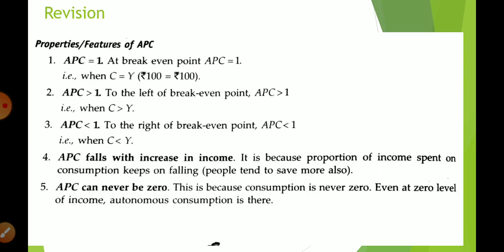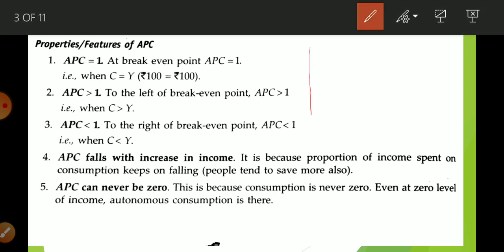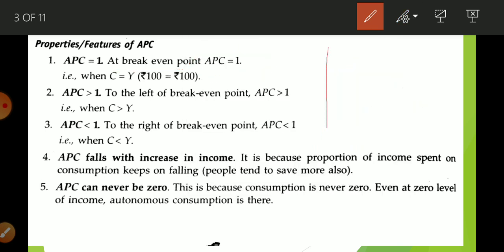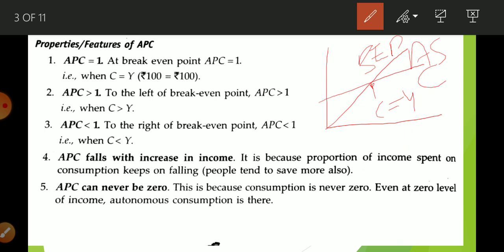Regarding APC properties: at the break-even point, APC is always equal to 1 because at that point C equals Y. Before the break-even point, C is greater than Y, so APC is greater than 1. Beyond the break-even point, Y is greater than C, so APC becomes less than 1 — because after this point people start to save. APC falls with increase in income.